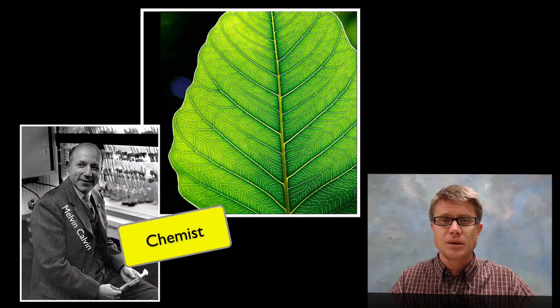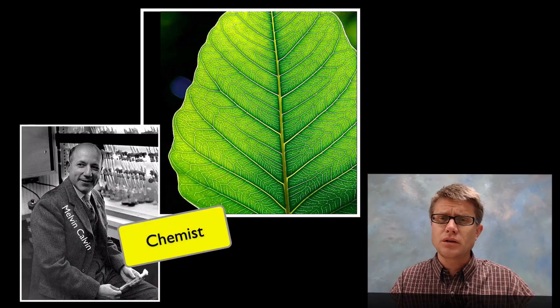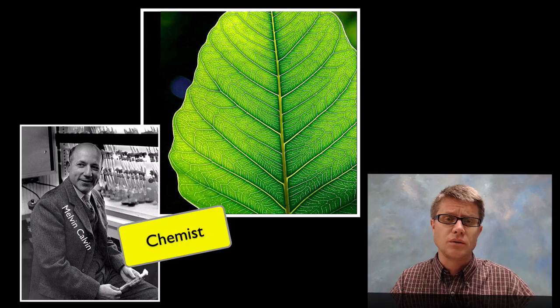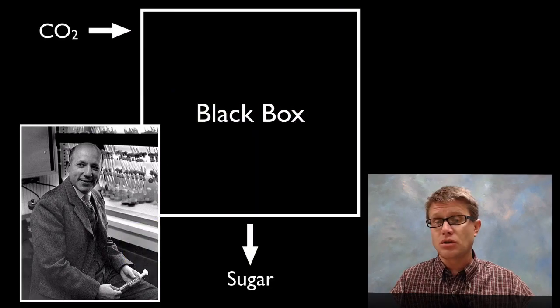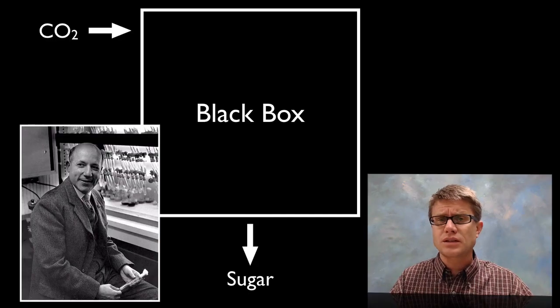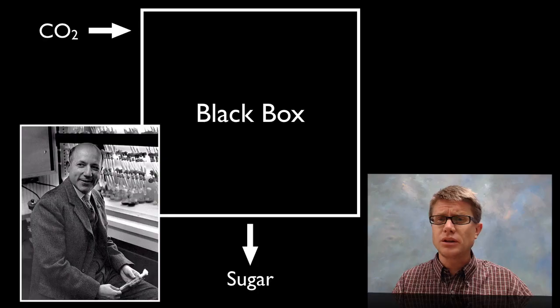And so let me give you an example of this. This is one of my favorite chemists. This is Melvin Calvin. He got a Nobel Prize for this work. And what he was trying to do is unlock what leaves do. In other words, leaves are able to take in carbon dioxide and make sugar. But it's not just one step. It's a series of steps that are going on. And until he figured it out it was really a black box.